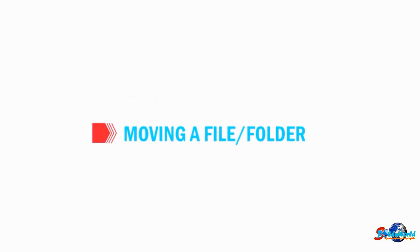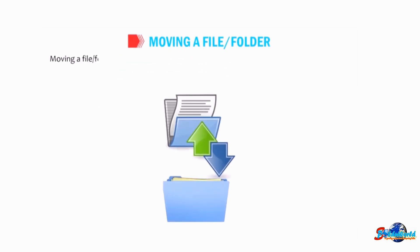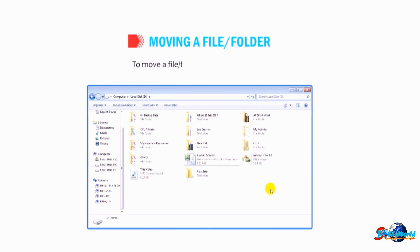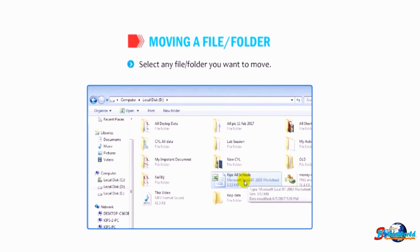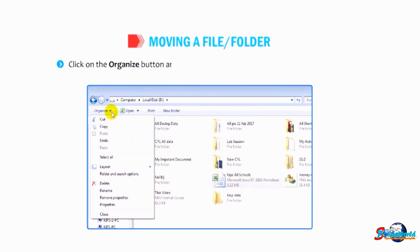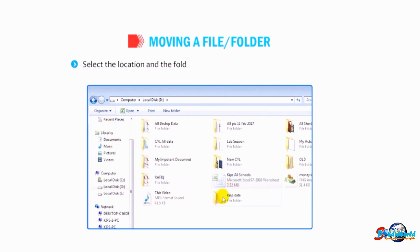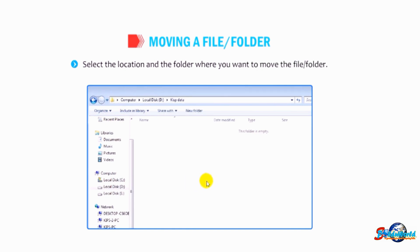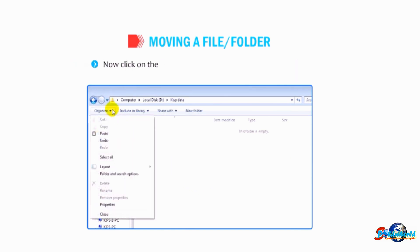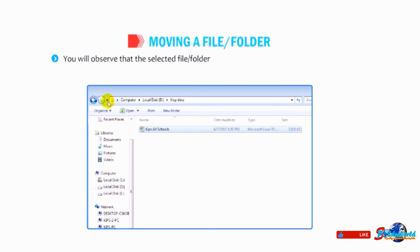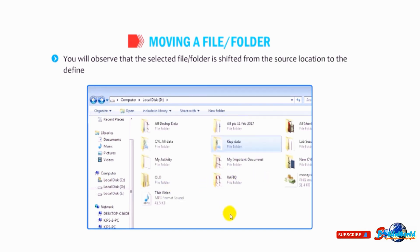Now let us learn how to move a file or folder. Moving means shifting it from its original location, the source, to another location, the destination. To move a file or folder, select the file or folder you want to move, click on the Organize button and select the Cut option from the drop-down menu. Then select the destination location and folder, and click on the Paste option in the Organize drop-down list. The selected file or folder is shifted from the source location to the defined destination.